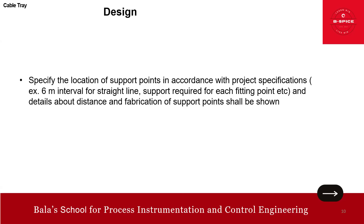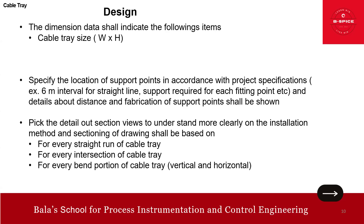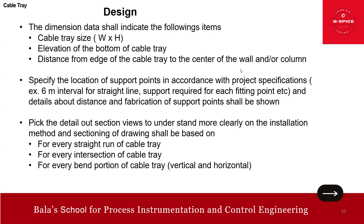For dimensional data: specify the cable tray size - width and height - the elevation of the bottom of the cable tray, and the distance from the edge of the cable tray to the center of the column or wall. Specify the location of support points per project specification - for example, 6-meter intervals for straight runs. Include section views at every straight line, every intersection, and every bend portion of the cable tray, both vertical and horizontal.